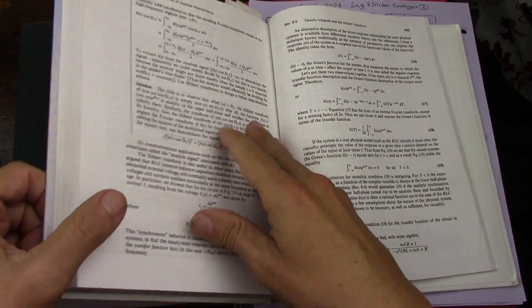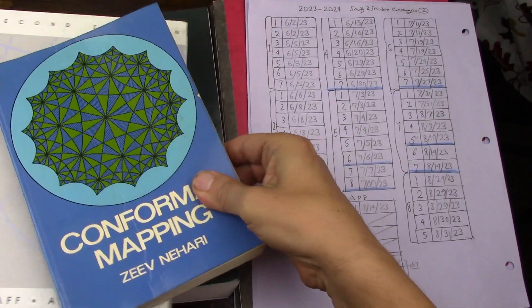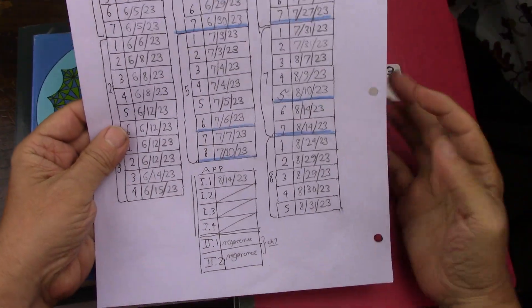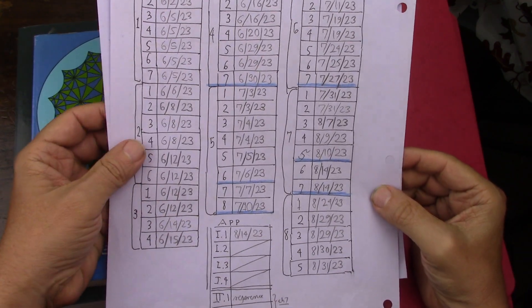So I'm nowhere near done. I think I probably have about another month of problems to work on for Saff and Snyder. Of course, completed so everything has been read and there you have it.